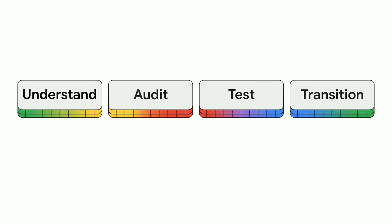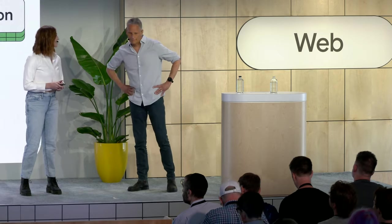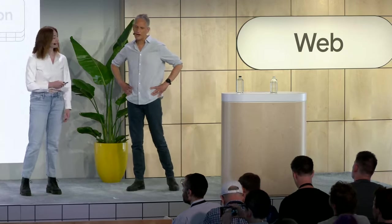There are four phases to transitioning from third-party cookies: first, understand third-party cookie deprecation; then audit your site for cookies; test for breakage; and transition to privacy-preserving alternatives. So Sam is going to take you through this process now.